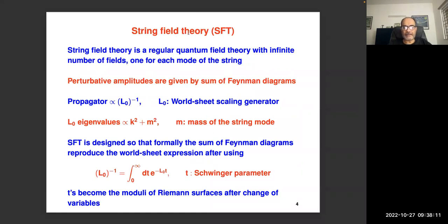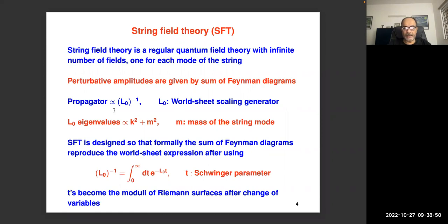String field theory can be thought of as a regular quantum field theory, the only difference being it has an infinite number of fields — one field for every mode of the string. Perturbative amplitudes in string field theory are given by sums of Feynman diagrams. The propagator of a string field is proportional to L_0 inverse, where L_0 is the worldsheet scaling generator. The L_0 eigenvalues of various string states are proportional to k² + M², where k is the momentum and M² is the mass squared of the open string state.